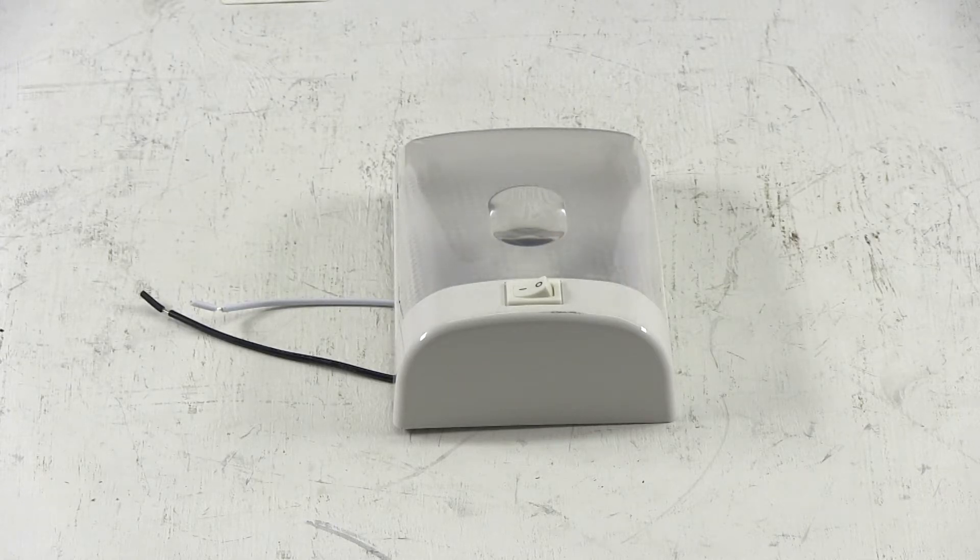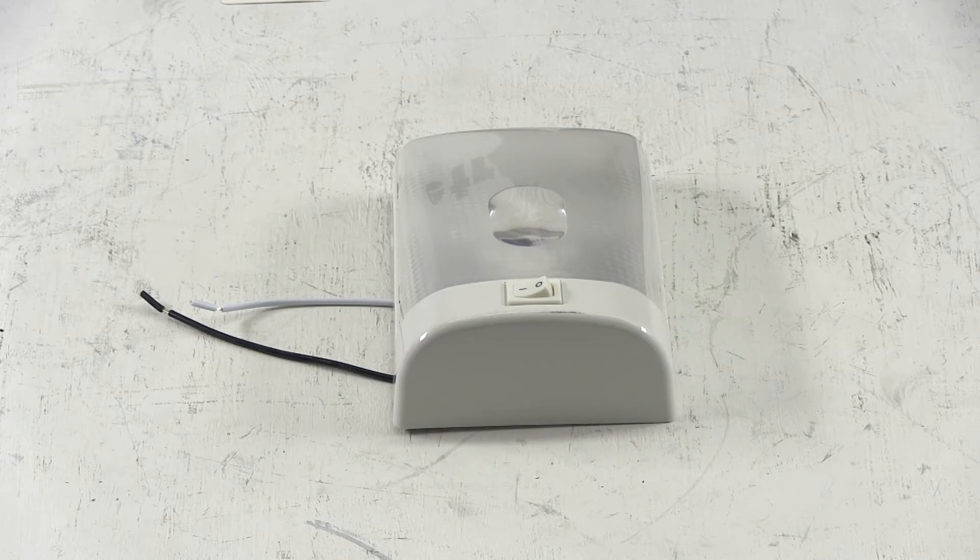Today we're going to show you Optronix RV Eurostyle interior ceiling light with built-in switch, part number RVIL21.